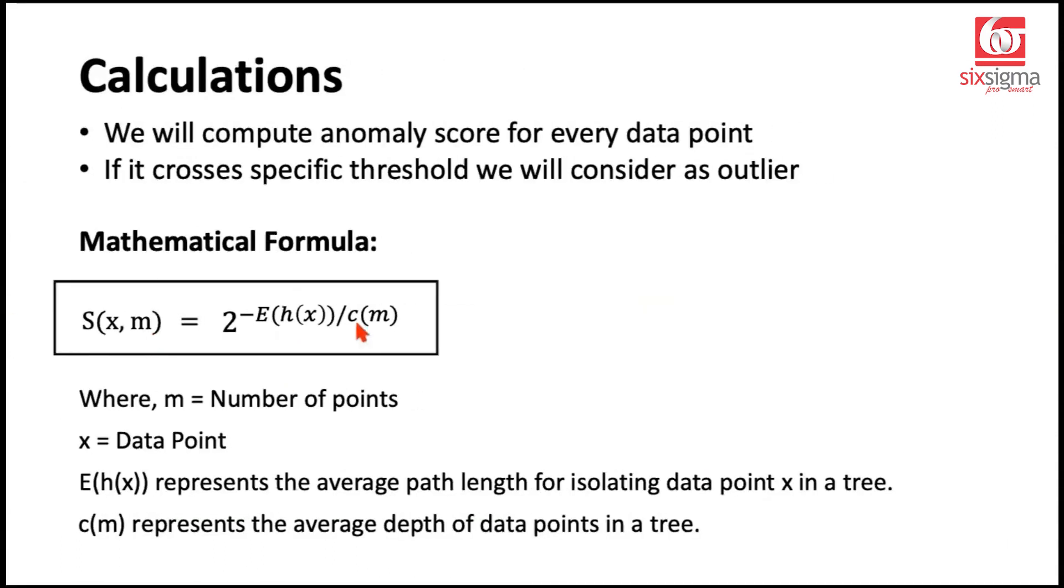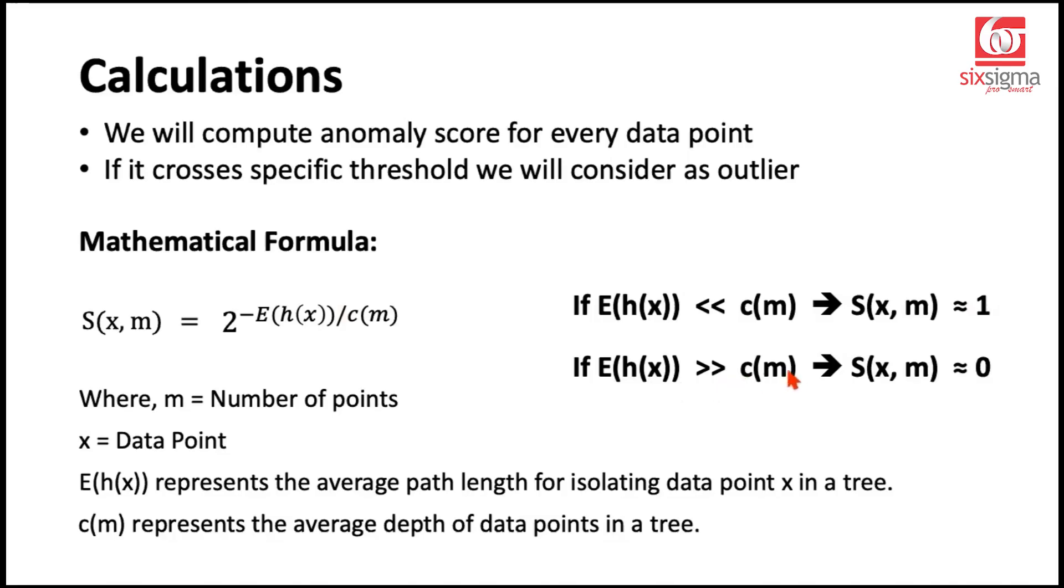If we look at this equation, let's try to understand the relationship between the average path length for the point that has been isolated as an anomaly versus the average depth of all the data points in a tree. If we have the E(h(x)) much less than c(m), then this function, which returns the anomaly score, tends to 1. You can imagine if this value is much less, which means the value in the denominator is much higher. So, you have a small value divided by a much larger value, this would almost become 0. This power becomes 0 irrespective of the sign, negative or positive, 2 raised to the power 0, that's going to be 1. And likewise, if we have this E(h(x)) much greater than c(m), then what happens? Then we have a pretty high power of a number which is greater than 1. And this is with a negative sign, which means now this value overall would tend to 0.